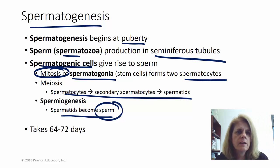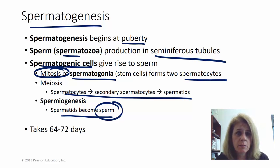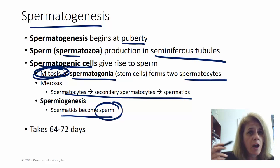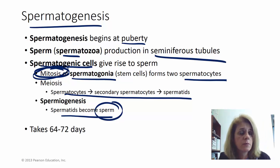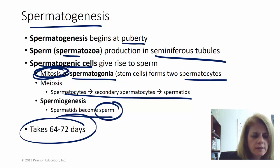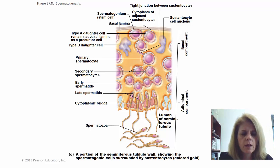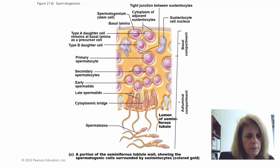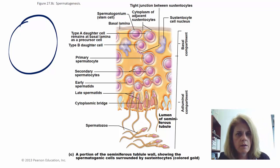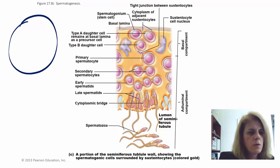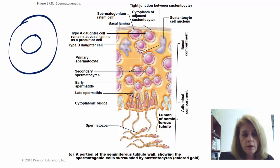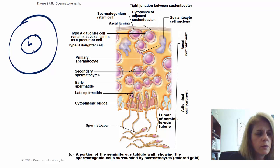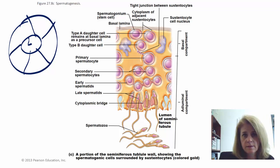This first mitosis event in making sperm is really important because it allows males to have an unlimited supply of sperm — they always have a mitosis event making more stem cells that can become sperm later on. This whole process takes about 64 to 72 days. I want to give you a visual so you can picture what's going on.